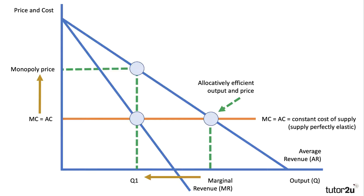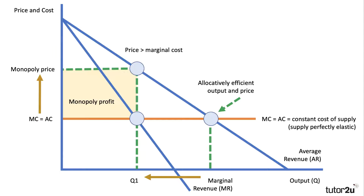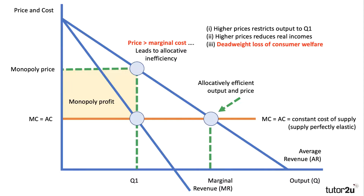If a monopoly took control of the market, assuming they're profit maximisers, they would squeeze output to Q1 — a lower output — and raise price to the monopoly price shown in the diagram, because they can control the price at which the product is sold. The monopoly price will be well above marginal cost. As a consequence, the firm extracts consumer surplus and turns it into monopoly profit, and there's a loss of welfare — this is allocative inefficiency. Higher prices restrict output to Q1.